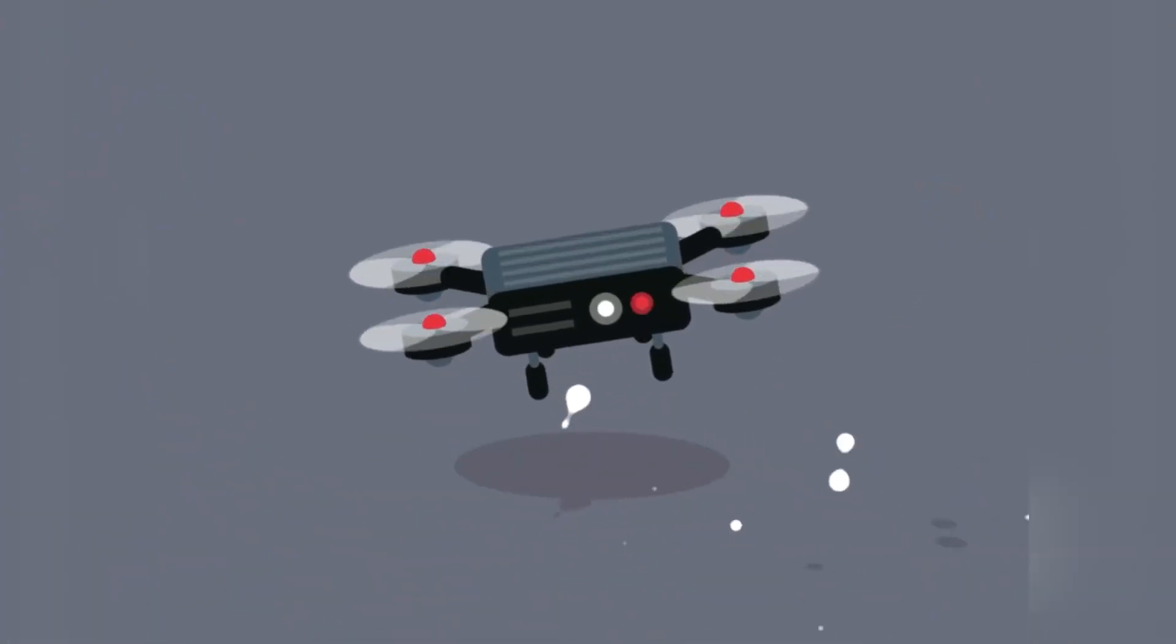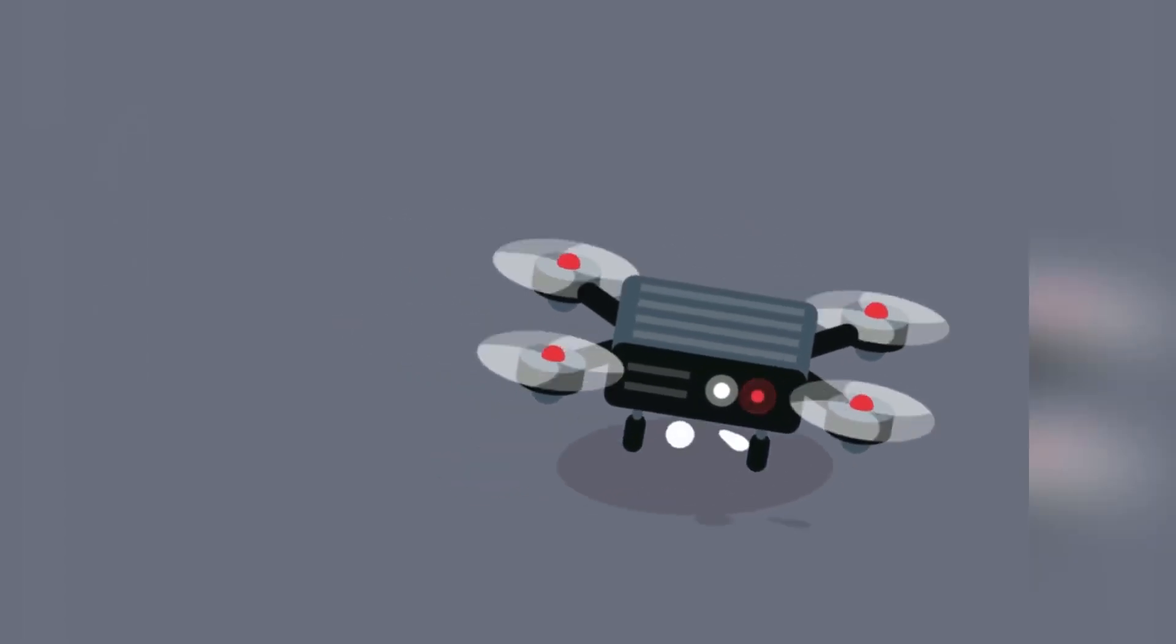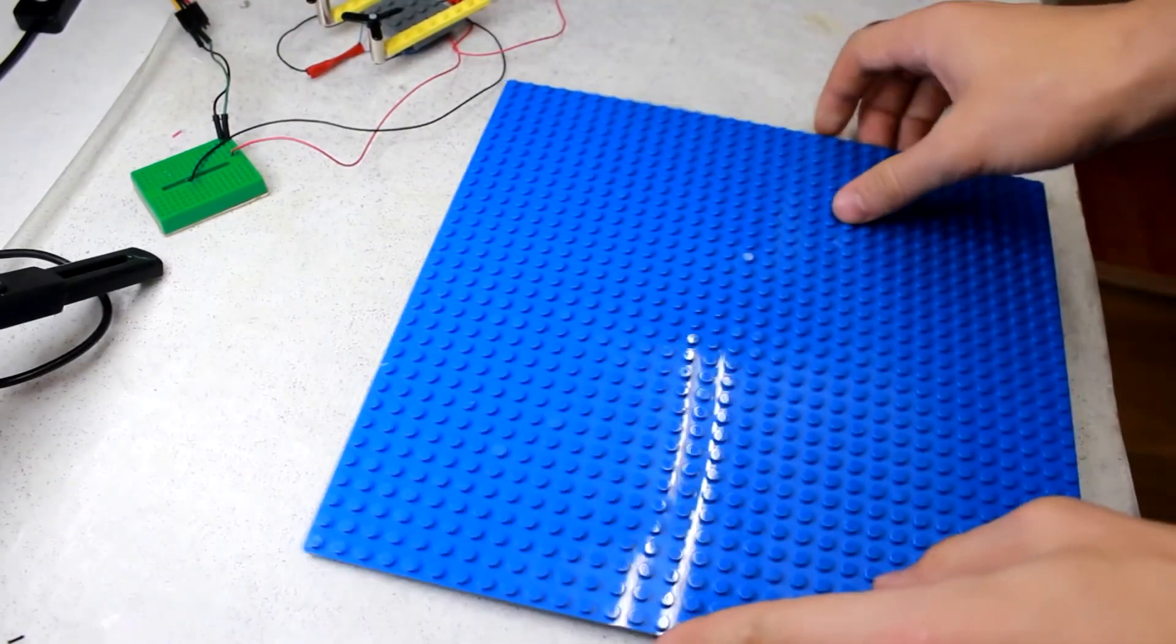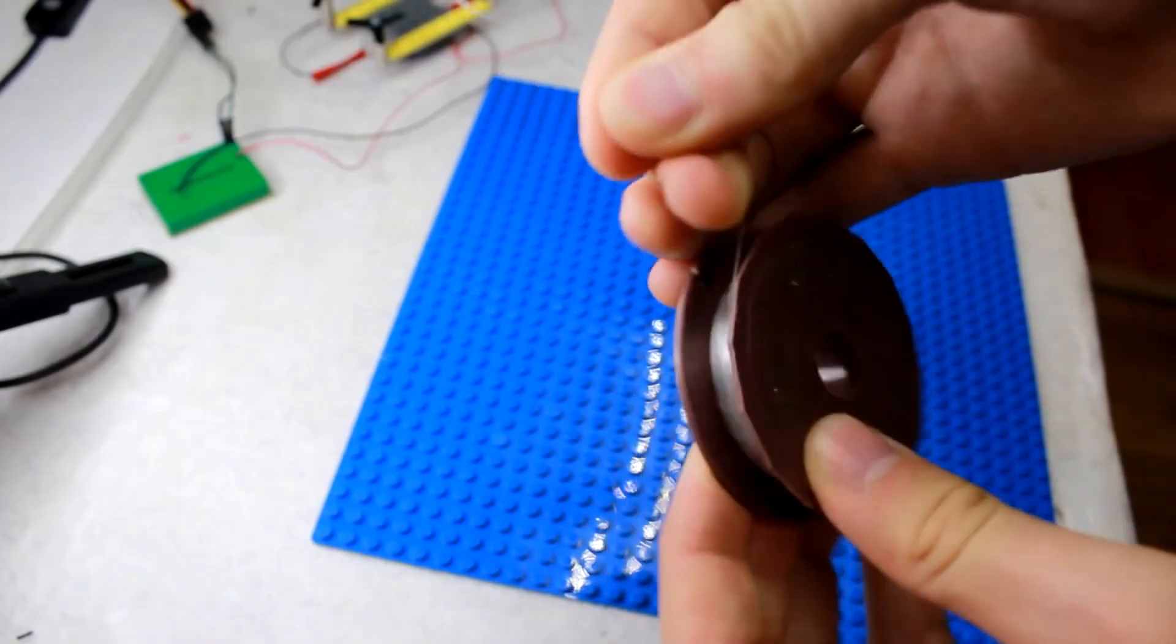But sadly, I cannot do this because we need propellers that rotate in different directions, which LEGO doesn't release. So, I'll clumsily stabilize the flight with fishing line.